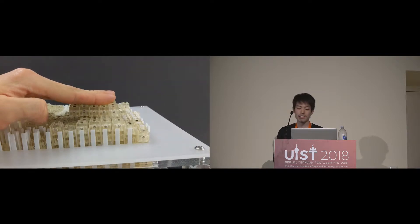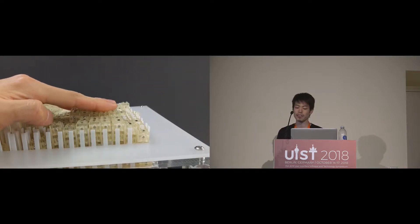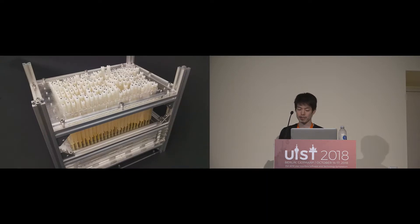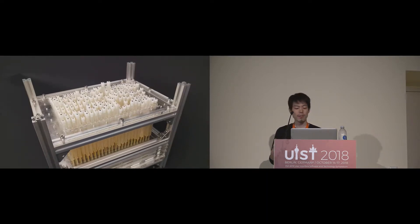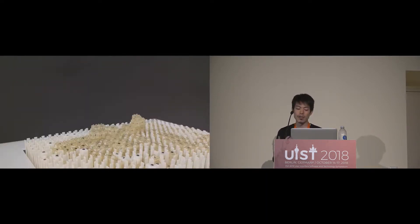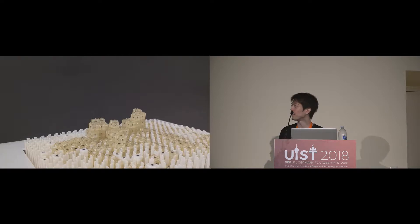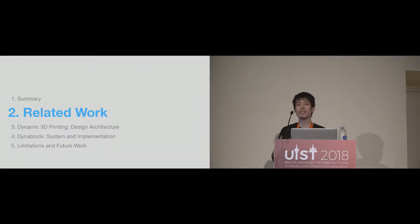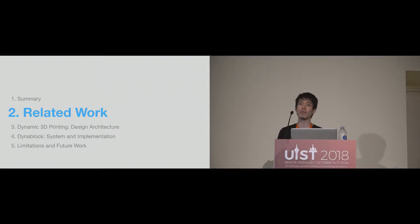The rendered shape can also be disassembled and reconstructed as a new object. This paper describes the design and implementation of such a system and explores application scenarios enabled by dynamic 3D printing. In the remainder of the talk, I'd like to cover related work, design, system and implementation, and finally, limitations and future work.